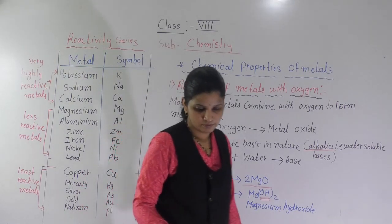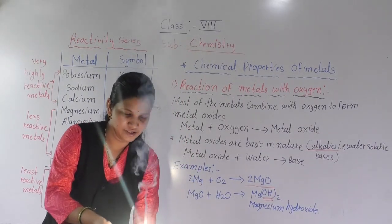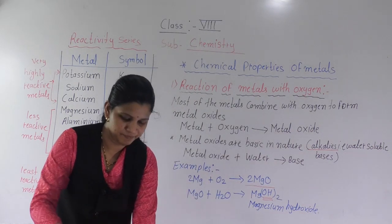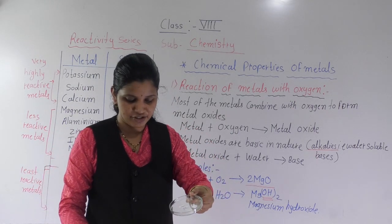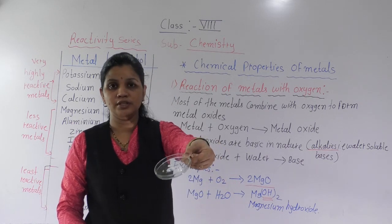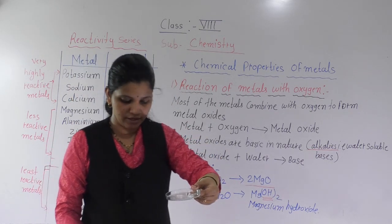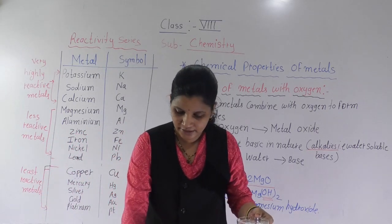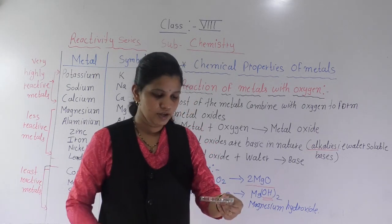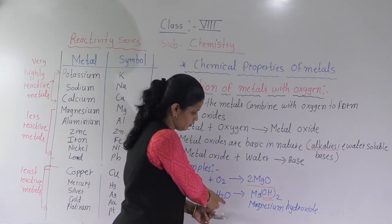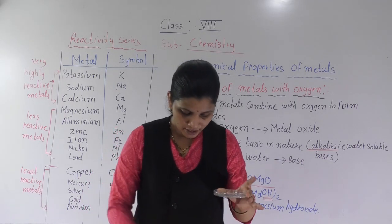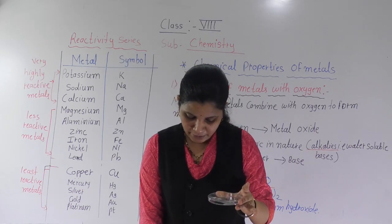Now we will see this with a practical. We take one magnesium ribbon, burn it, and collect the magnesium oxide produced. This magnesium ribbon is burning with a white flame. Here, magnesium oxide is collected. You know that for burning, oxygen is essential. You can see this white magnesium oxide. Now we will add a little amount of water: magnesium oxide plus water gives magnesium hydroxide.